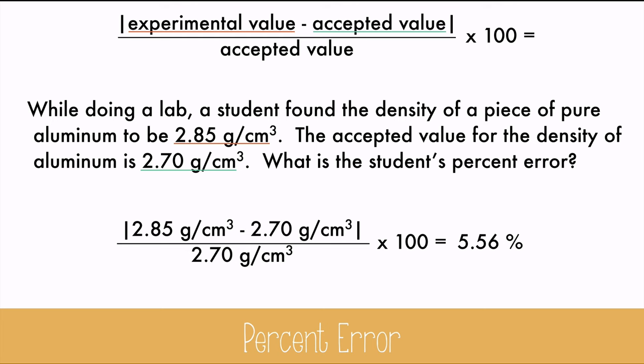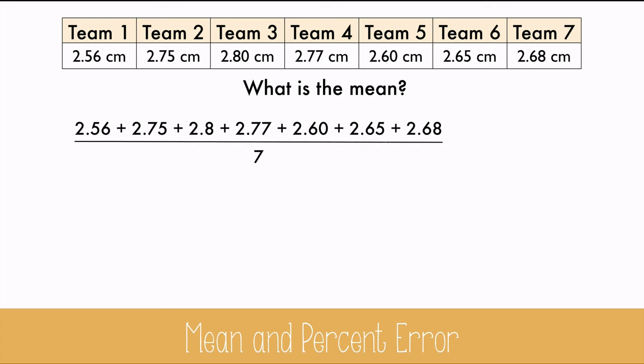Let's look at another set of data. Seven teams measured an object with a ruler, but came up with different answers. What is the mean? We'll add up all the numbers and divide by 7, because there are 7 groups. And you get 2.687. Let's keep it to 3 digits and round to 2.69.